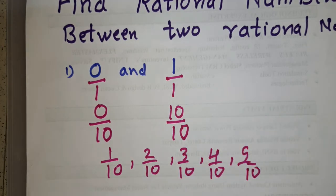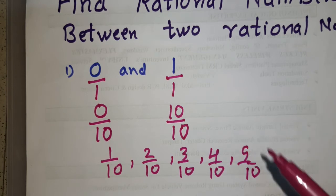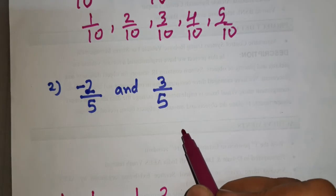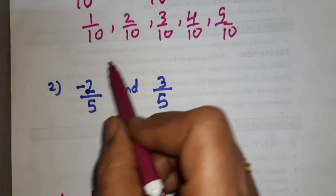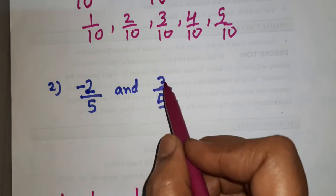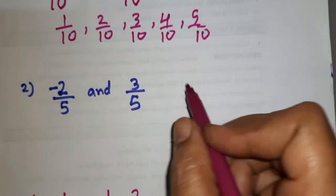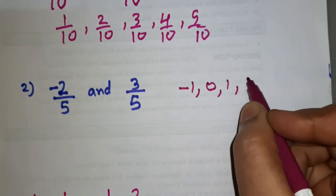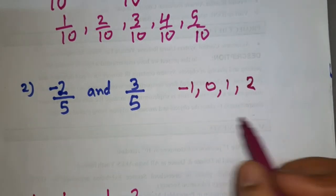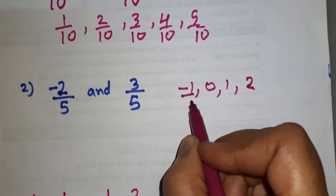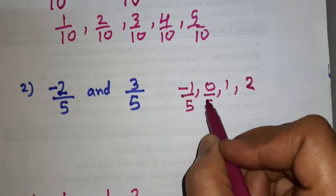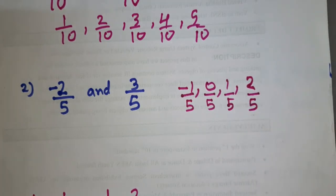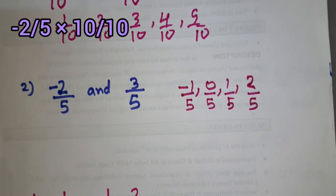You will get almost 99 rational numbers between these two. Now let us look at rational numbers minus 2 by 5 and 3 by 5. Looking at the numerators, the integers between minus 2 and 3 are just minus 1, 0, 1, and 2. So the rational numbers between these two are minus 1 by 5, 0 by 5, 1 by 5, and 2 by 5.